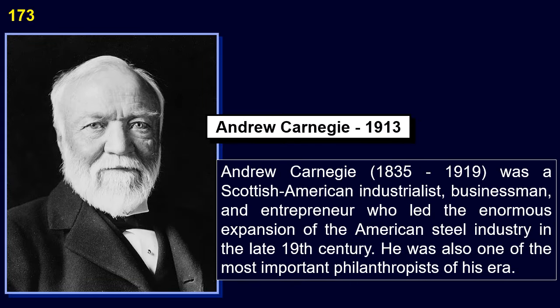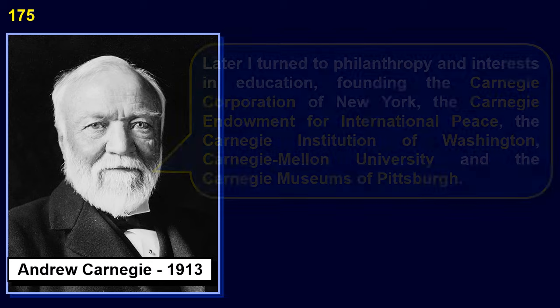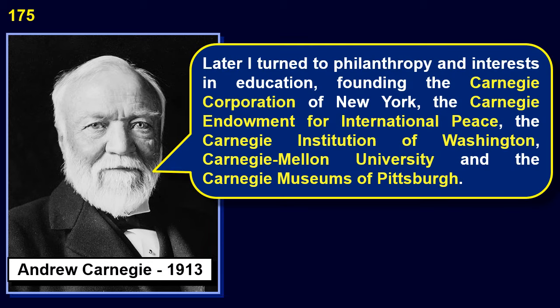Andrew Carnegie (1835–1919) was a Scottish-American industrialist, businessman, and entrepreneur who led the enormous expansion of the American steel industry in the late 19th century, and was also one of the most important philanthropists of his era. Carnegie built Pittsburgh's Carnegie Steel Company, which was later merged with Albert H. Gary's Federal Steel Company and several smaller companies to create U.S. Steel. With the fortune he made from business, he built Carnegie Hall. Later Carnegie turned to philanthropy, founding the Carnegie Corporation of New York, the Carnegie Endowment for International Peace, the Carnegie Institution of Washington, Carnegie Mellon University, and the Carnegie Museums of Pittsburgh.